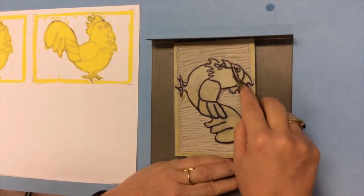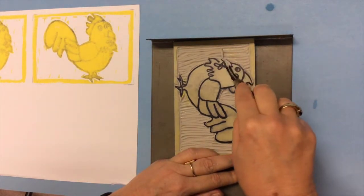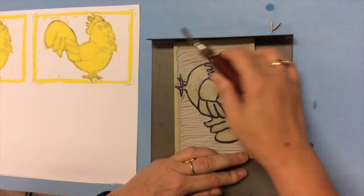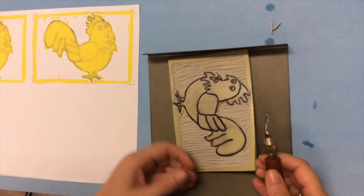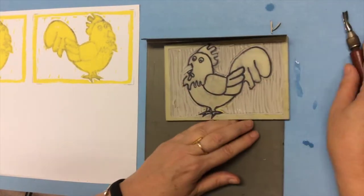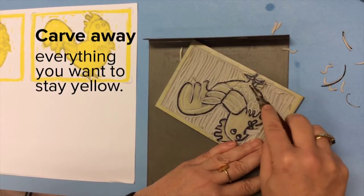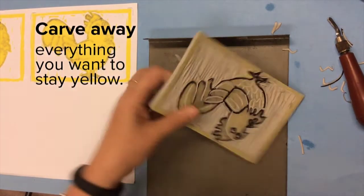Okay now we have to carve again. This time we're carving away everything that we want to stay the first color. In this case yellow. So I'm going to start by carving away the beak. This is the step you really have to think about before you start. You might actually want to color the pieces that you're going to carve away. Now I'm carving a feather design into my rooster. It's the details that are going to make your projects stand out and be amazing.